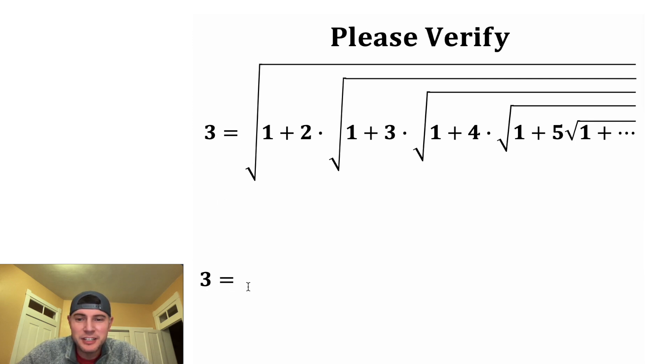So first let's copy down the 3 and that's going to be equal to a square root of something. Well 3 is equal to the square root of 9. We want this to be 1 plus something. So let's change this 9 into a 1 plus 8. So we're starting to build this out.